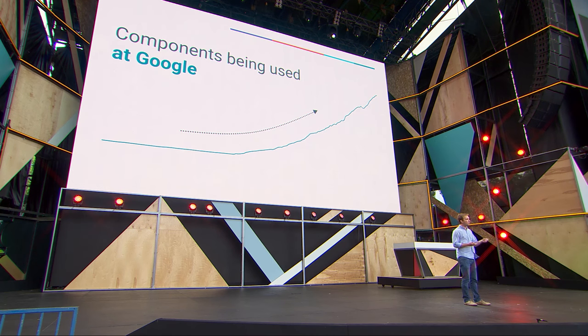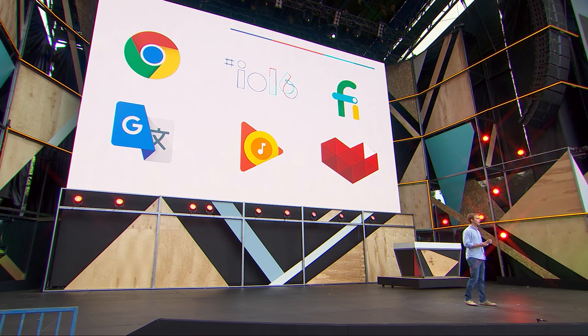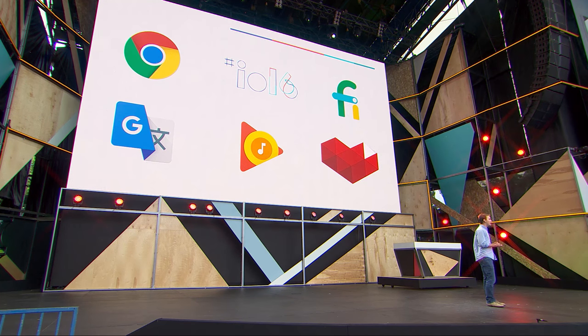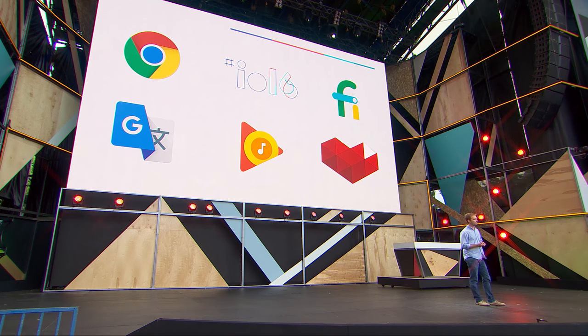Polymer is already launched in production across major Google properties, including Chrome, Translate, Play Music, YouTube Gaming, Google Fi, and of course the Google I.O. web app, which I'm sure you're all familiar with. You can see how serious a strategic initiative Polymer is for Google — it's already being served in production to over a billion users on Google products.